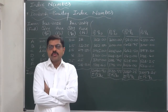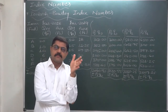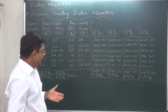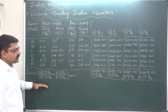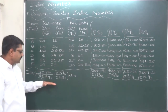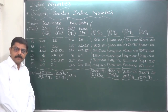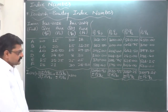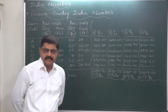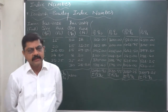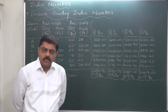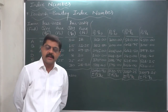So we have two ways: either to calculate Laspeyres' index number and Paasche's index number first and then find their arithmetic mean. Another way is to directly calculate the Dorbish and Bowley index number using the formula, which ultimately gives the simple arithmetic mean of Laspeyres and Paasche's index numbers. In this case we are going to calculate Dorbish and Bowley index number both ways — first by direct formula. But I suggest that if you have already calculated Laspeyres and Paasche's index numbers, first check your calculations for both of these.